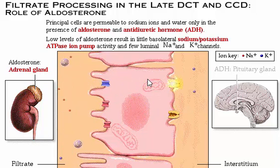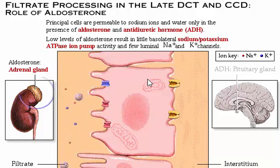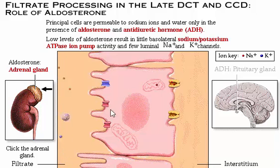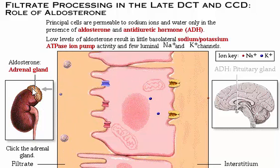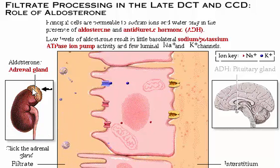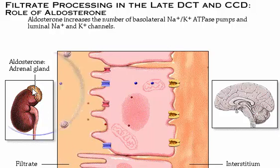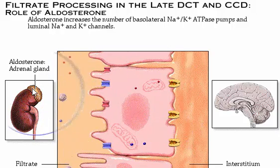However, a decrease in the level of sodium ions or an increase in potassium ions will trigger the release of aldosterone. Click the adrenal gland on top of the kidney icon to see the results of increasing aldosterone levels on these cells. In response to increased aldosterone, both sodium ion reabsorption and potassium ion secretion increase.